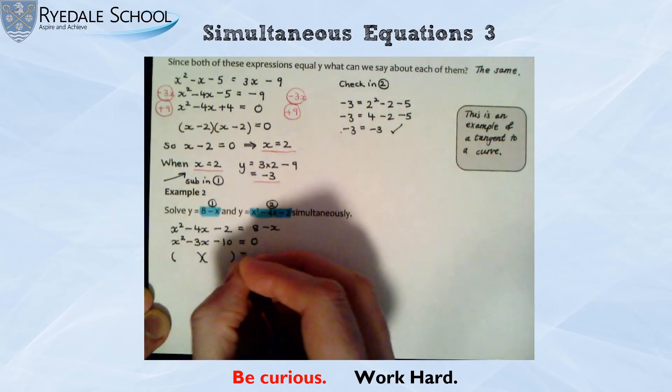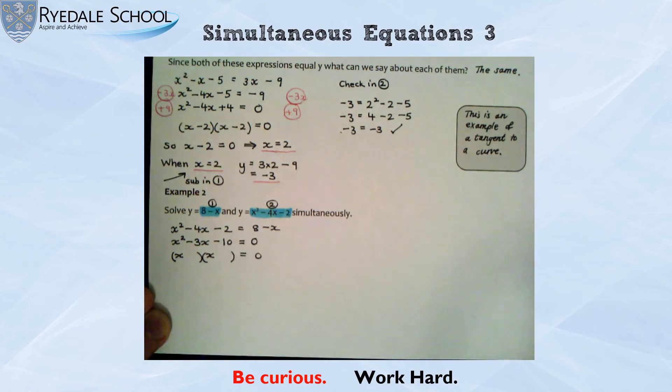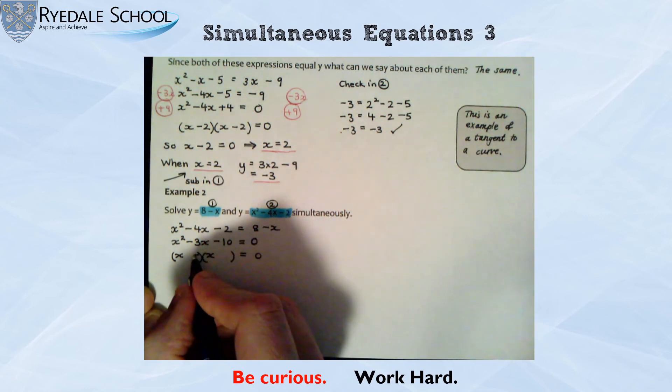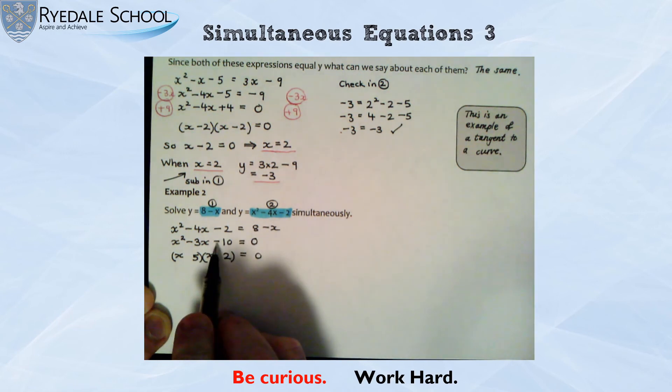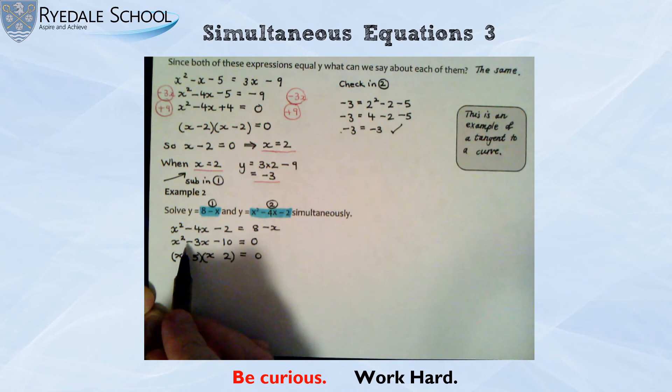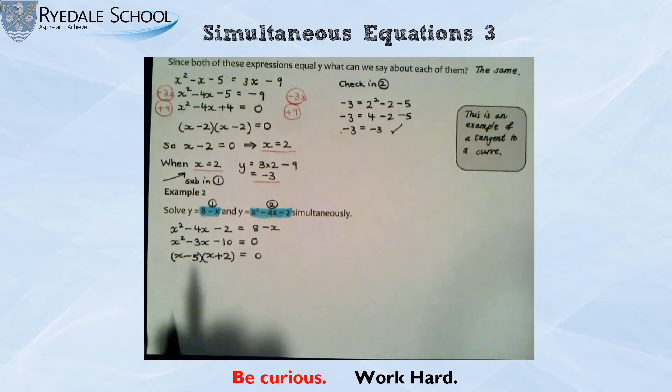Okay. This time, I'm looking for numbers that multiply to make 10. Since it's 1x squared, I can put my x in straight away. And the only numbers that multiply to make 10, we could list them, are 1 and 10 and 5 and 2. It's going to be 5 and it's going to be 2. This negative tells me the signs are different. I'm trying to make negative 3. So it is negative 5 plus 2. So this time, these two brackets are different. So that is going to give me two different answers.